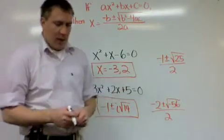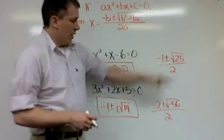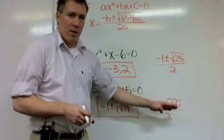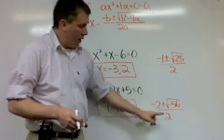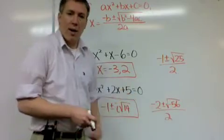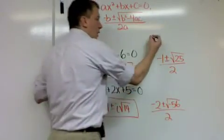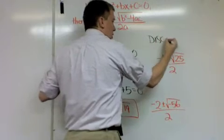But what I want you to see here, both of these, as I was writing out the problem, I got to a step that looked like this. And underneath the square root here, I got 25. And underneath the square root here, I got negative 56. And that number is called the discriminant.